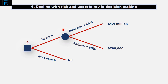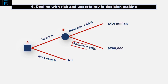A circular node is down to chance. Reading from left to right, we can see Jack initially has a choice of whether to launch or not. If he doesn't launch, his return is nil. If he does, then it's down to chance. This takes him to node B. There's a 40% chance of success and a 60% chance of failure.